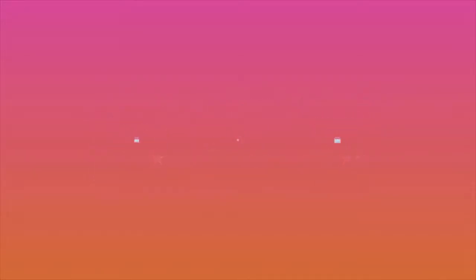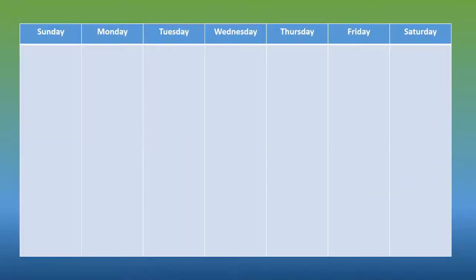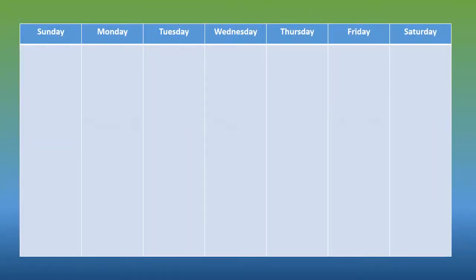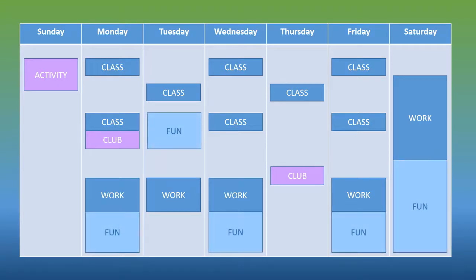Weekly calendars can help you schedule the hours of your day. First, record activities for the week that are non-negotiable, such as classes or work. Then add negotiable events — for example, meetings or extracurricular activities that may be okay to miss sometimes. Be sure to include time for fun, like recreation and socializing.